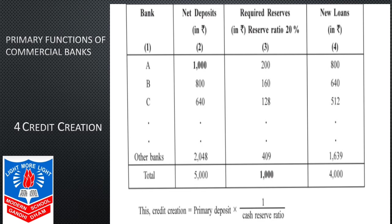The borrower has to open an account with the same bank or another branch in order to deposit the check of the loan. When the check is credited in the new account, it becomes derived deposits. From these derived deposits, the bank can create still another loan for a third person. The third person's loan becomes one more deposit for the bank. Thus, a bank can create several deposits from a single primary deposit. It is assumed that all transactions are undertaken via bank.